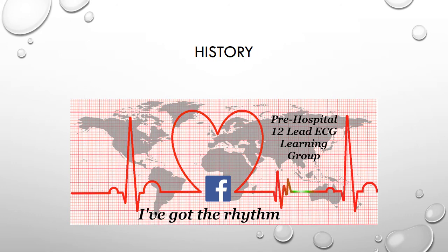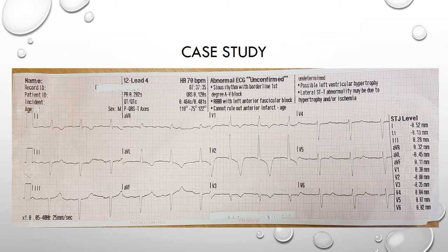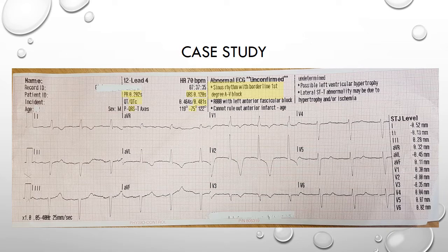So should you bother with an ECG? Well in this case we did. The rate is about 72 and is sinus in origin. There is a slightly long PR interval of just over 200 milliseconds as measured by the computer, hence the borderline first degree block. Axis is leftwards. The QRS is wide at 120 milliseconds and the QTc is prolonged. We have a dominant R wave in V1 with widespread secondary ST wave changes.